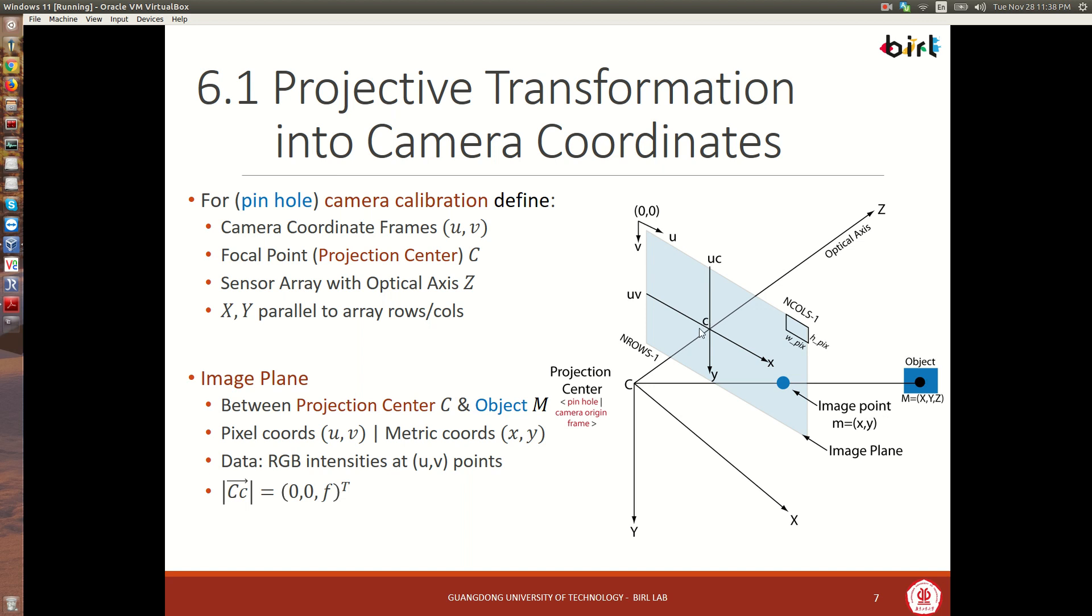A few things that we're interested in computing is the center point of that image sensor array, which we call little c. And so, the coordinates of that would be U_C for the middle of the columns and V_C for the middle of the rows, where U goes from 0 to N_columns minus 1, and V goes from 0 to N_rows minus 1. And where each pixel in that sensor array has a known height and a known width.